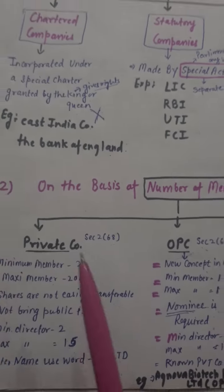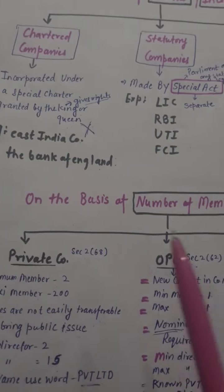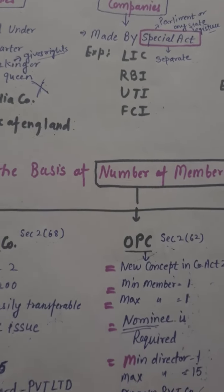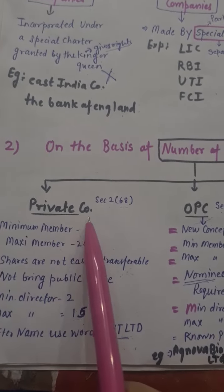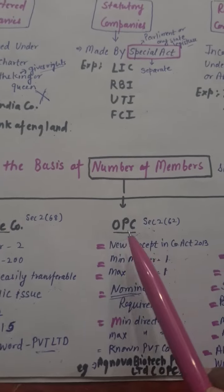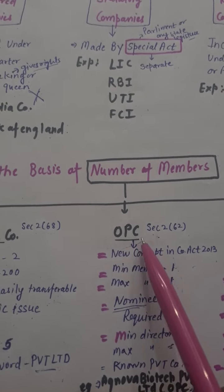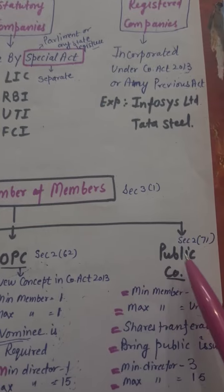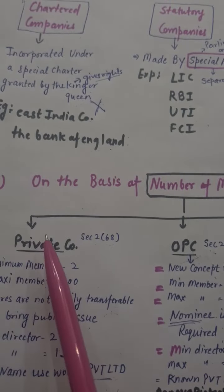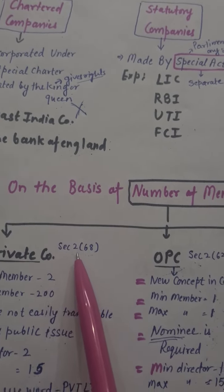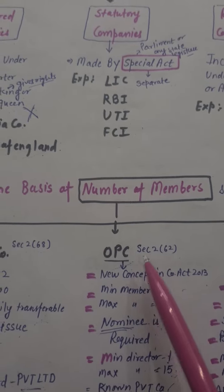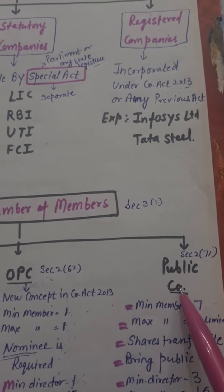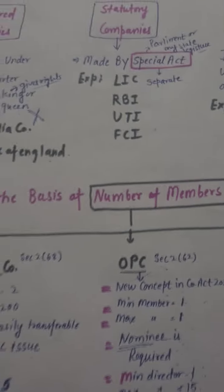The next category is on the basis of number of members. Companies are divided into three parts: private company, one-person company — the new concept OPC — and public company. Private company is defined under Section 2(68), OPC under Section 2(62), and public company under Section 2(71).